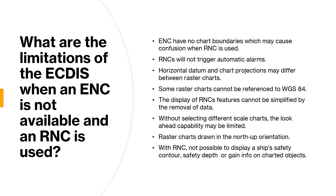With an RNC it is not possible to query features to gain additional information about charted objects — whatever has been scanned is what you get. It is also not possible to display a ship's safety contour or safety depth and highlight it on the display unless these values are manually entered into the route planning. There are other limitations as well, but I wanted to cover the key ones so that you can answer these questions quickly at orals and demonstrate your knowledge.